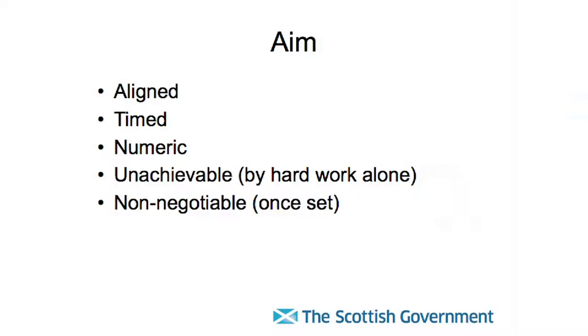The aim should be aligned, timed, and numeric — how much, by when. It should be unachievable by hard work alone, so it avoids people thinking they need to run faster and work harder; it's got to be a change to the system. And it's non-negotiable once set. You set the aim, and it is an aim — not a target. On the Early Years Collaborative, because of the government's role in producing targets, we've made it clear to people that if they don't achieve the aims they're not going to get punished, but it's meant to get them to stop and think about how they would ever achieve that.